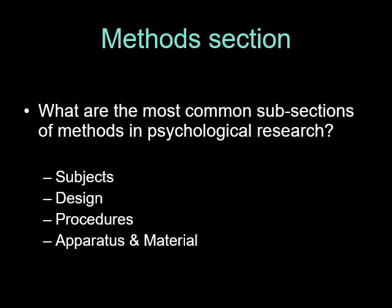The next section is the method section. You should talk about who participated in the study — the subjects. You should talk about the design: is this an independent groups design, a repeated measures design, or a single-N design like a case study? Then there are the procedures, which is the major part within the method section that tells the reader exactly how things were done. Think of the methods section as a huge recipe book. Apparatus and materials covers what kind of raw materials you need to actually perform the experiments.